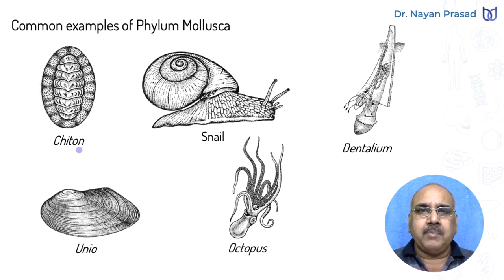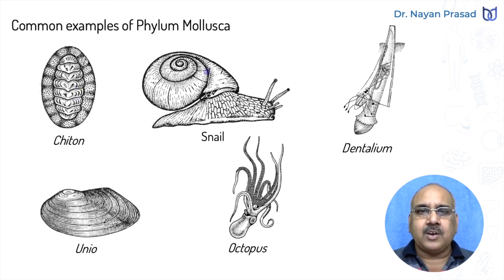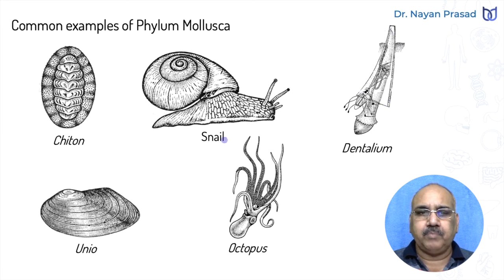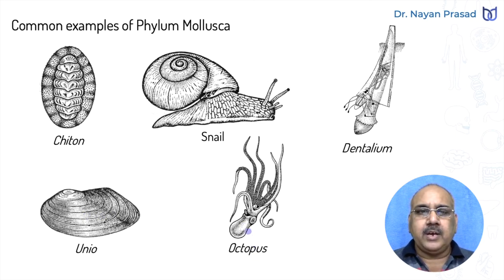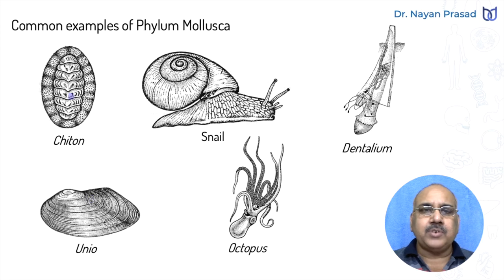One of the animals is Chiton. Chiton has an outer covering on its dorsal side — the back side — this is the shell. A snail has a coiled shell. Dentalium is a marine animal having a conical shell as an outer protective covering. Shell is present in Unio also. Unio is a freshwater mussel. This shell is not seen in octopus. So here, different examples of Phylum Mollusca have been shown, and in most cases we see an outer protective covering — the shell.